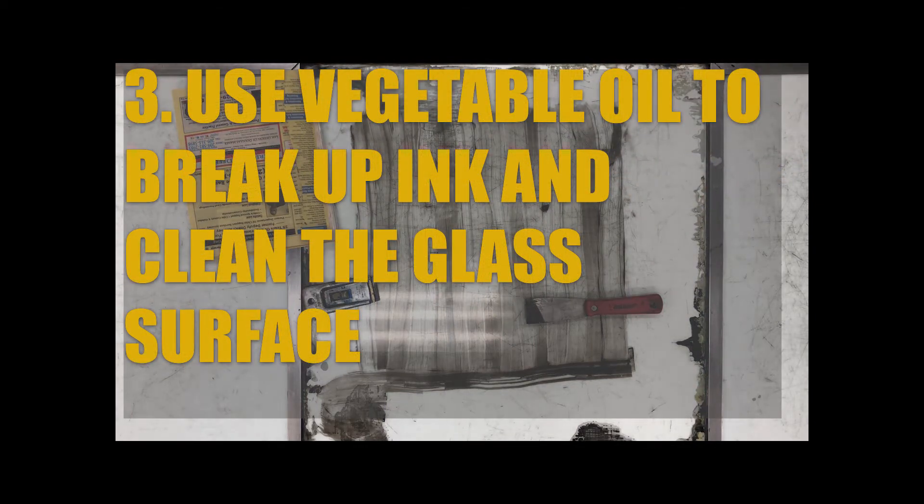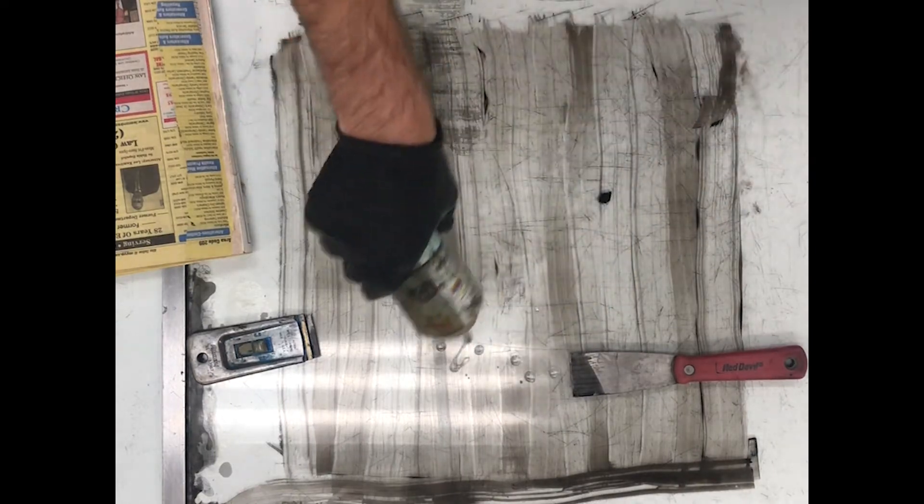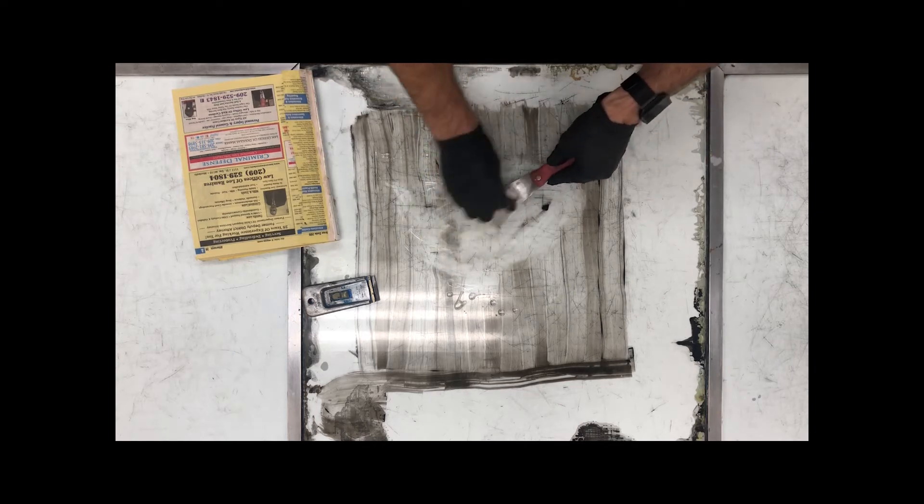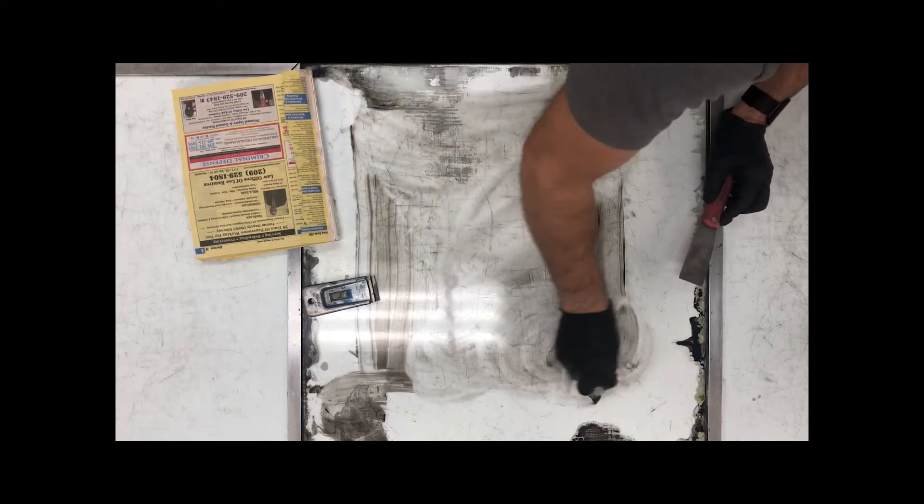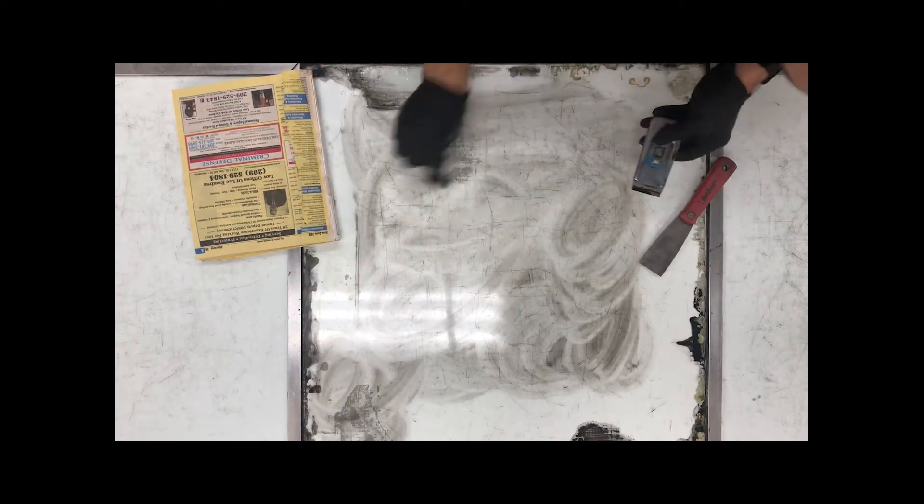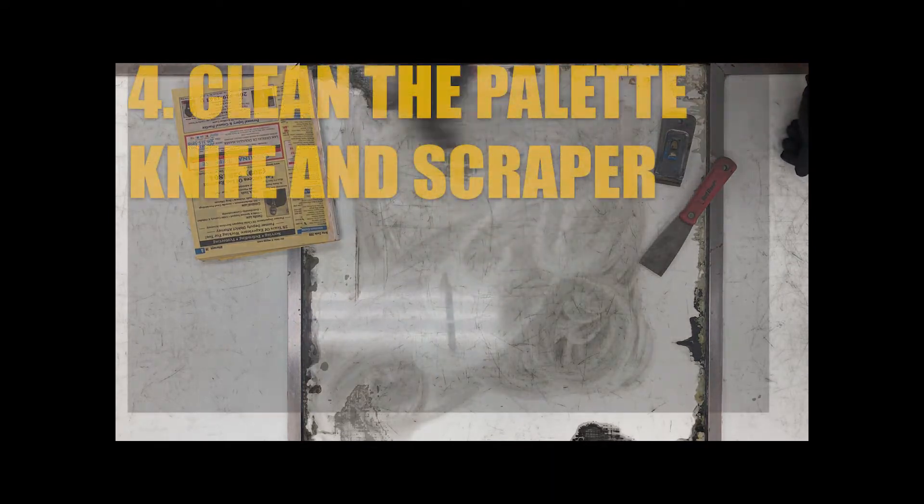Now I'm using the vegetable oil as a less toxic solution to clean up. The vegetable oil is greasier than the oil-based ink, so it loosens it all up. I'm breaking all that up first, and also cleaning off the palette knife and the razor scraper.